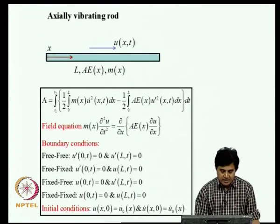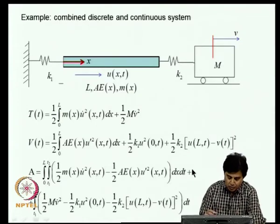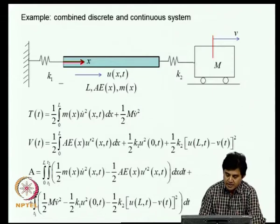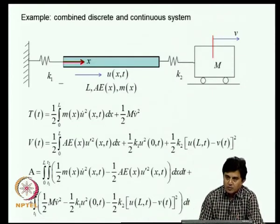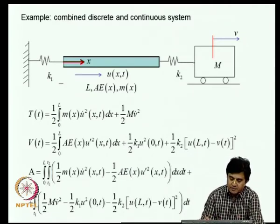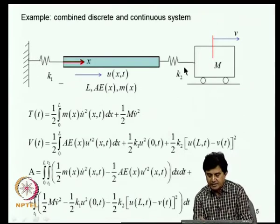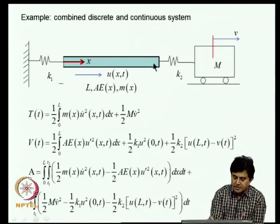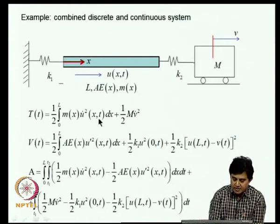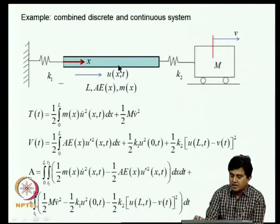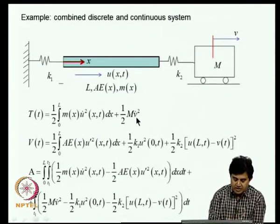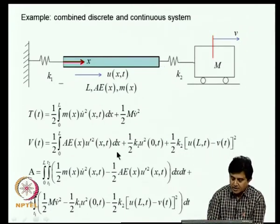In today's class we will extend this approach to a few examples. We consider an axially vibrating rod mounted on a spring at one end and carrying a mass through a spring at the other end. The kinetic energy consists of kinetic energy stored in the bar and the kinetic energy of the mass. U is the axial displacement of the bar and V is the displacement of the mass. The potential energy has contributions from strain energy in the bar and energy stored in both springs.